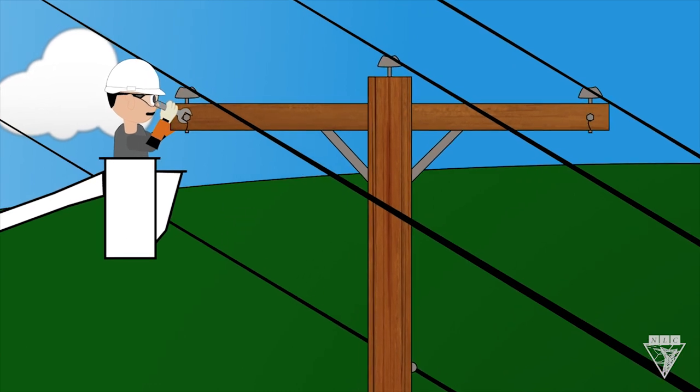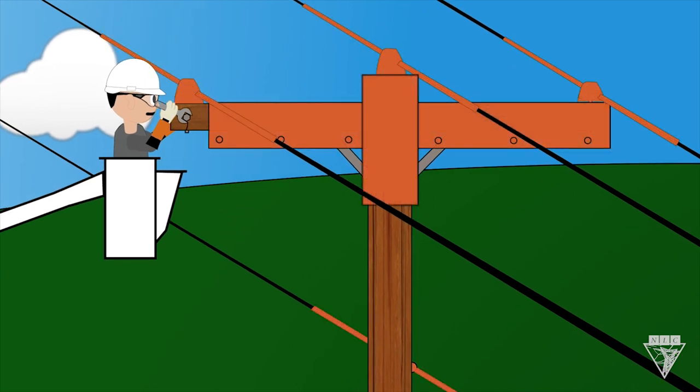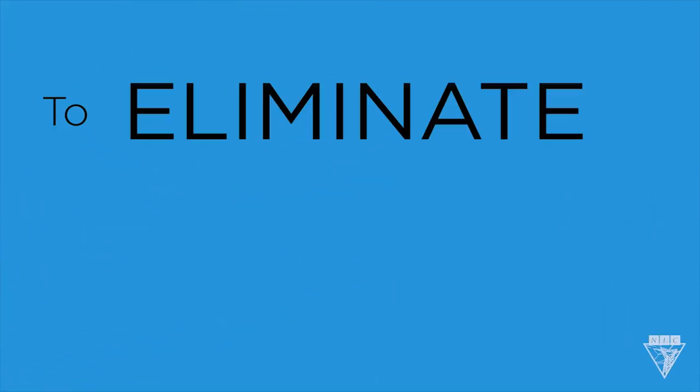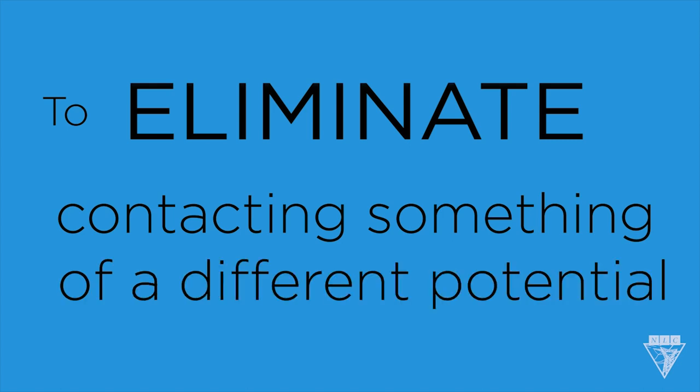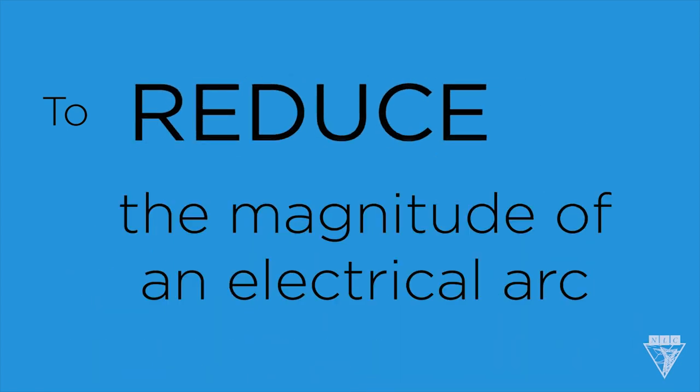When a person is working on energized conductors, adequate cover-up is extremely important for two reasons: to eliminate contacting something of a different potential and to reduce the magnitude of electrical arc.